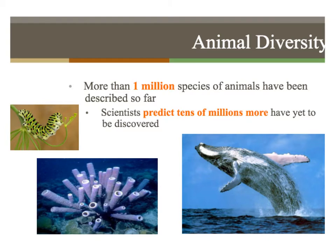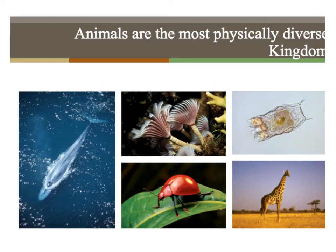Scientists have identified about one million species so far, and it's predicted that tens of millions more are yet to be discovered in places like the ocean and the rainforest. Animals by far are the most physically diverse kingdom of life. You can look at all the pictures here — we have animals that can swim and fly, insects, and things that don't even really look like an animal at all. So, a very diverse kingdom.